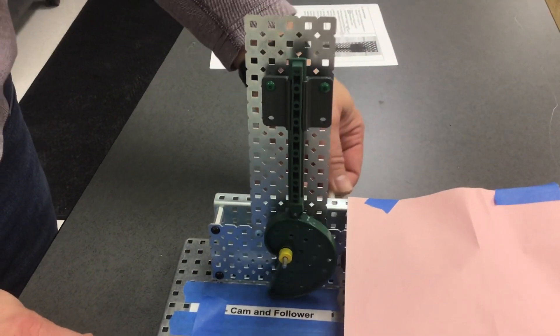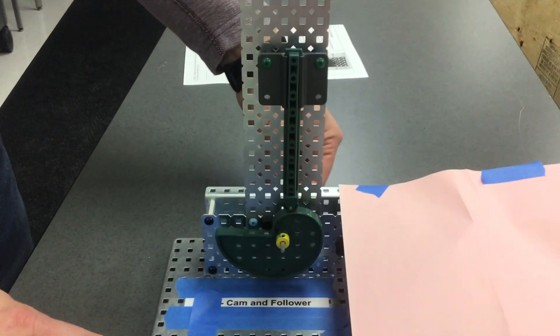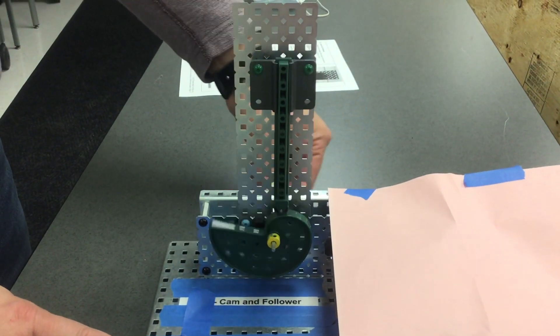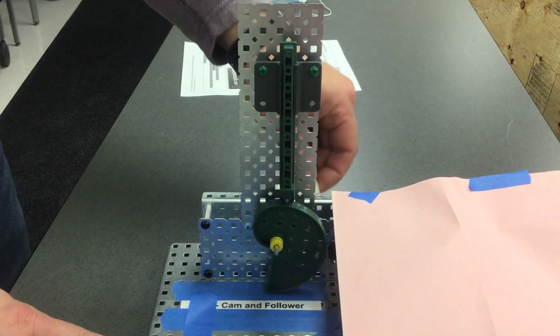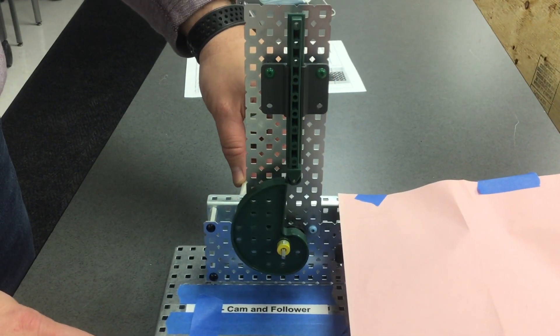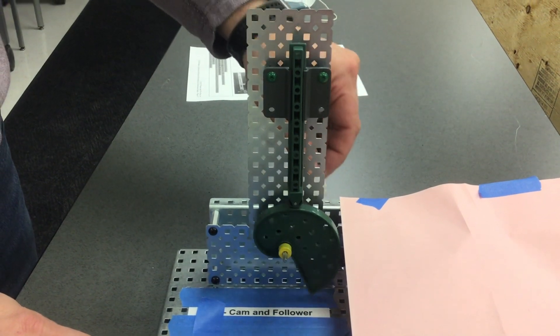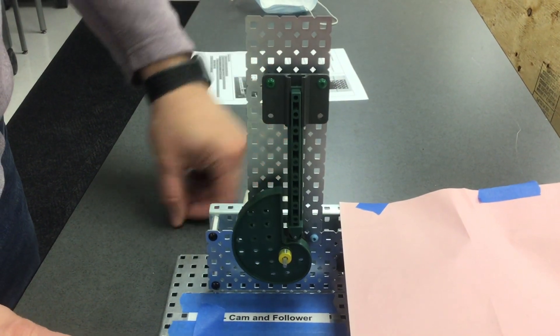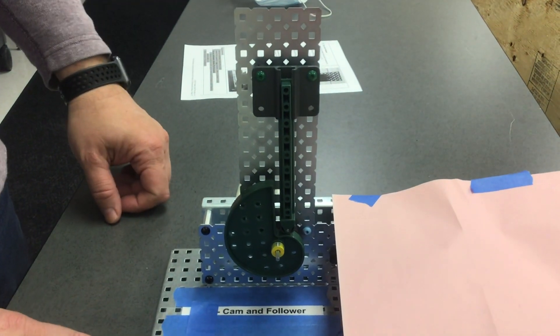I'm going to give this a little turn so you can see the follower go up and then fall down. I'll go a little slower so you can see it move. Now let's talk through the cam and follower.